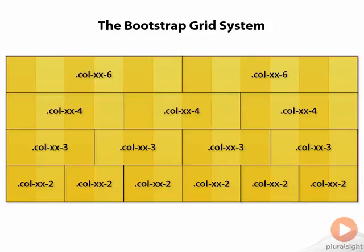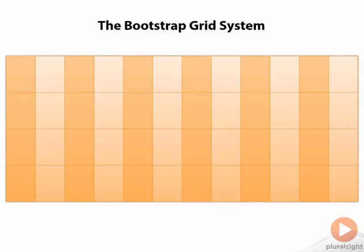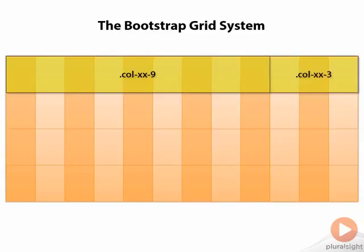Now in many cases your grid system isn't going to take these even units. You're not going to always have exact three fours across or four threes across — you're going to be mixing and matching these. In this case I'm having a column that's nine wide next to a column that's three to create that sort of main body and sidebar experience.